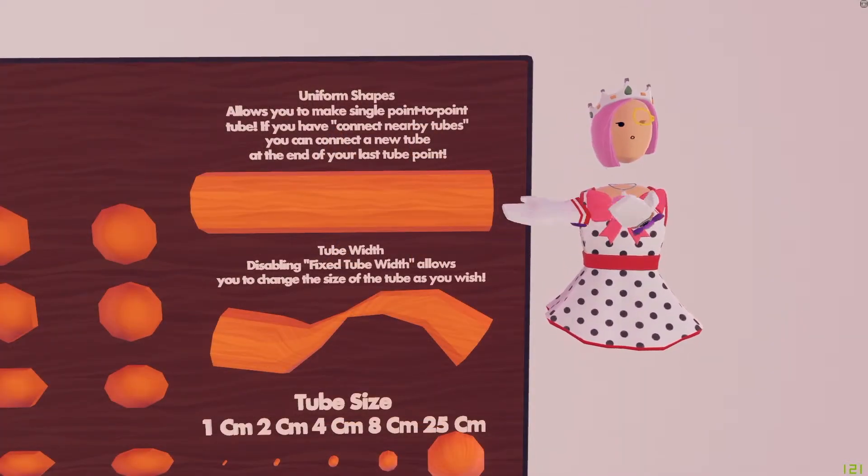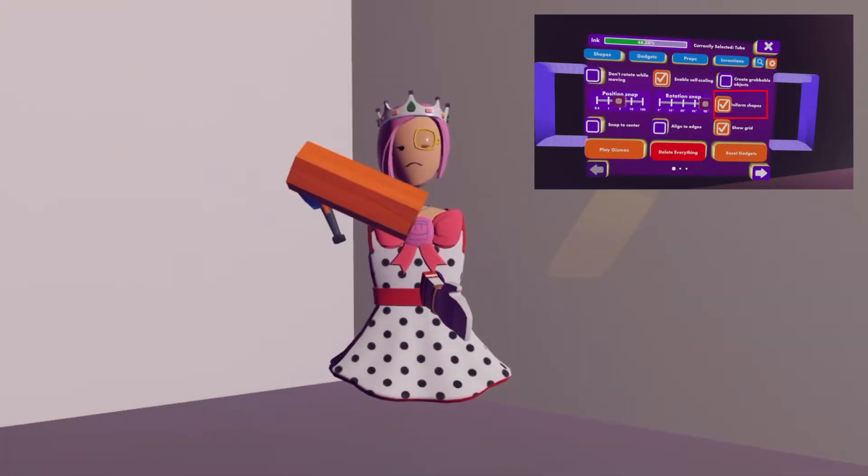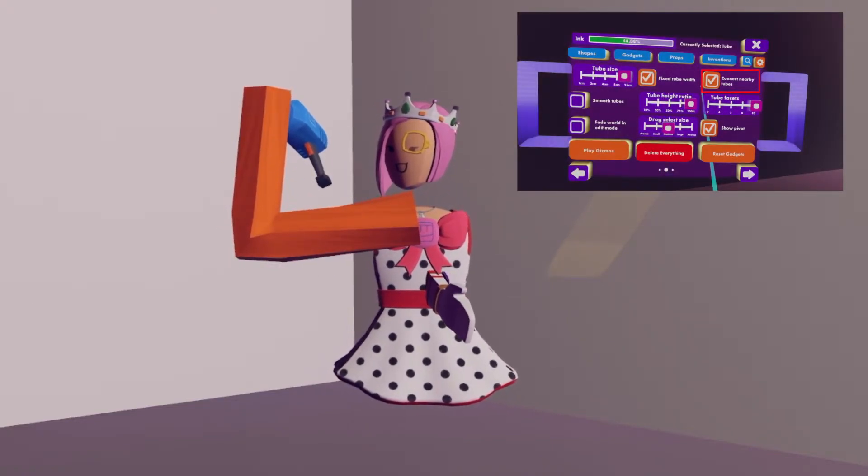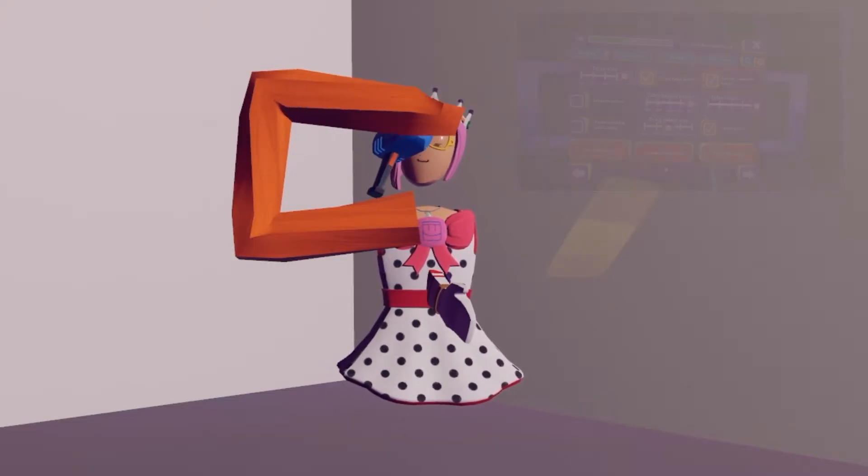Here we have uniform shapes. This allows you to make a single point-to-point tube. And if you have connect nearby tubes enabled, you can connect a new tube at the end of the last tube point.